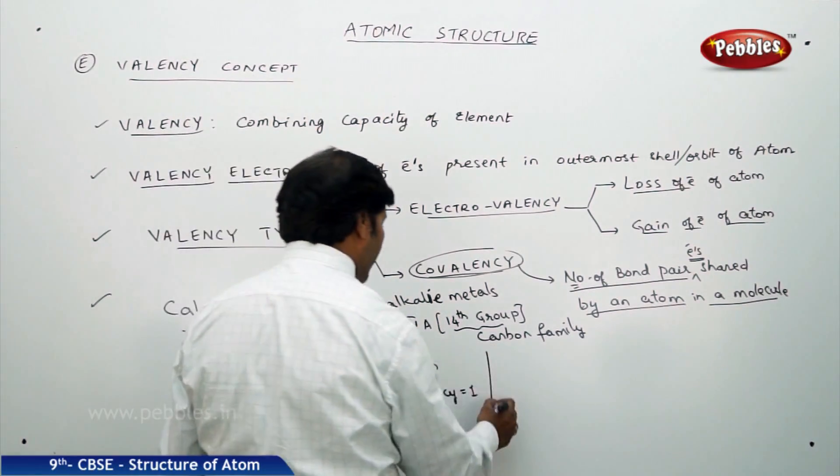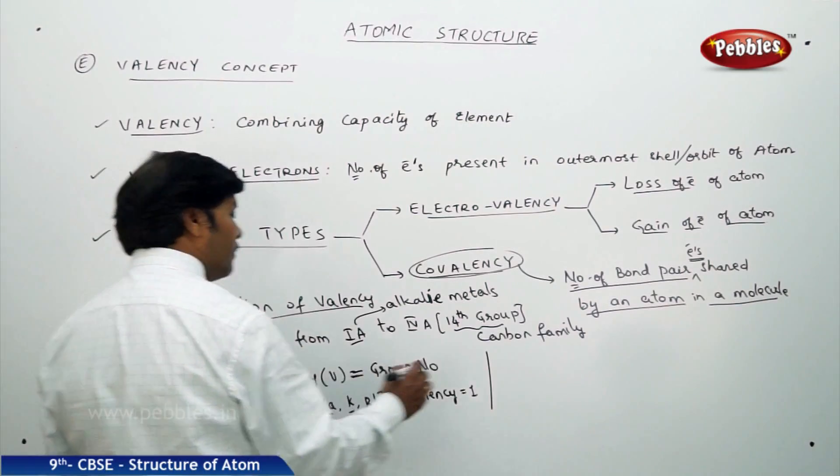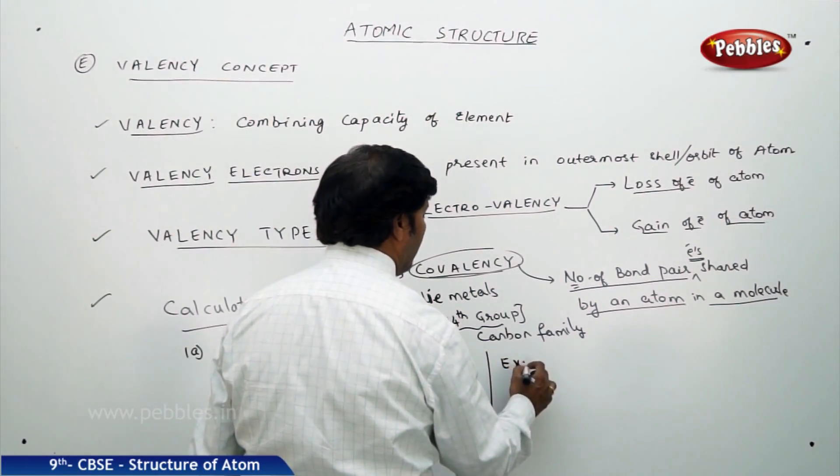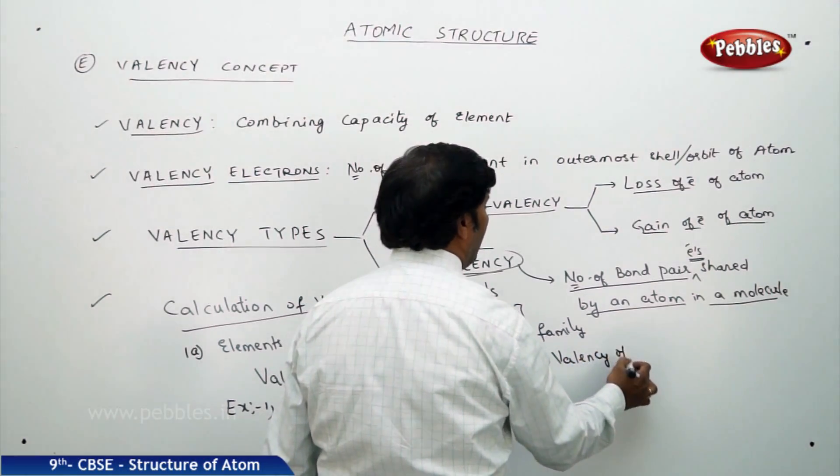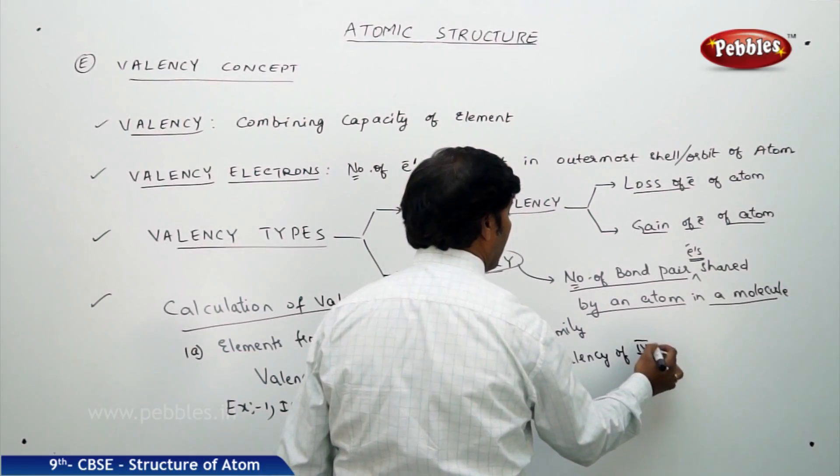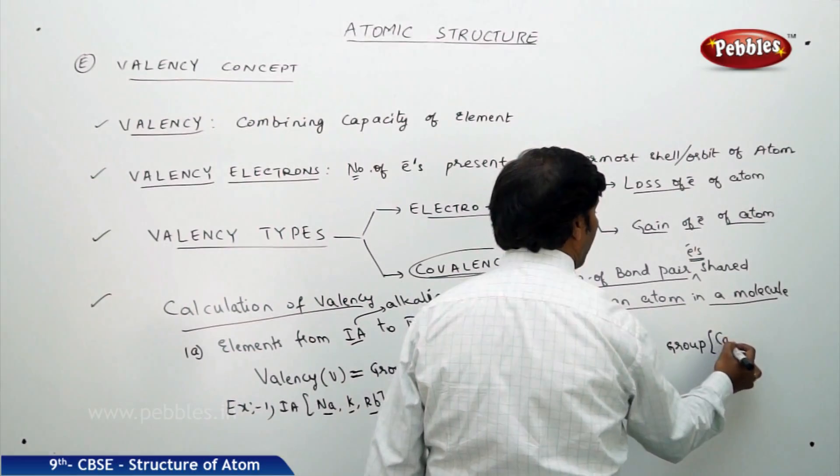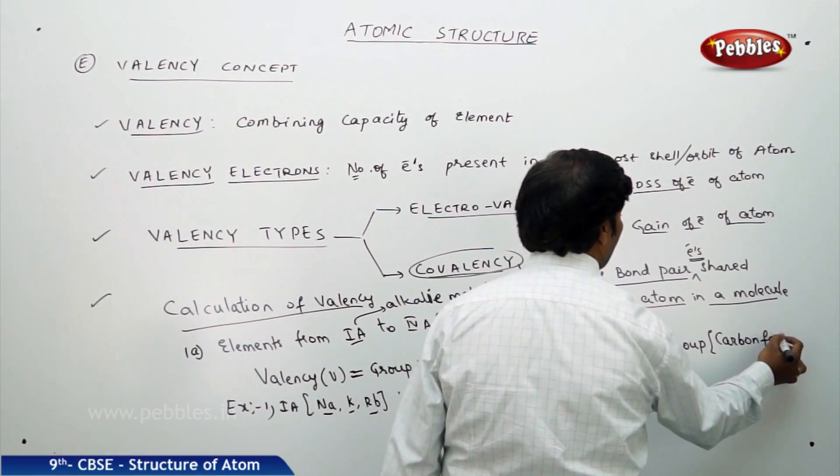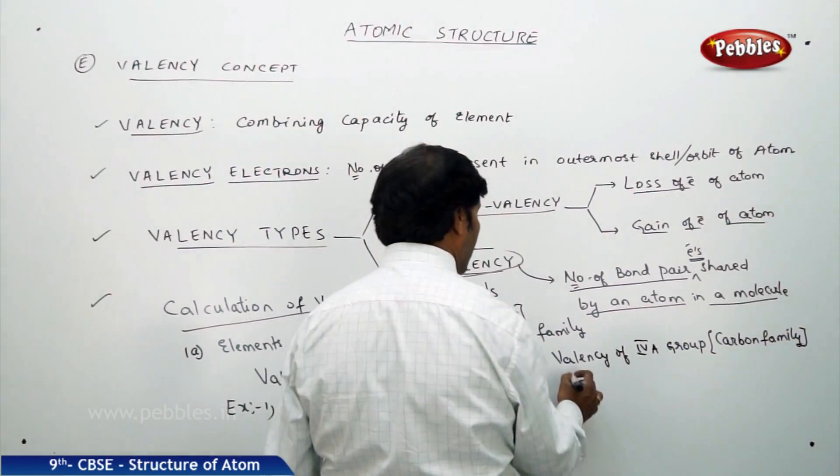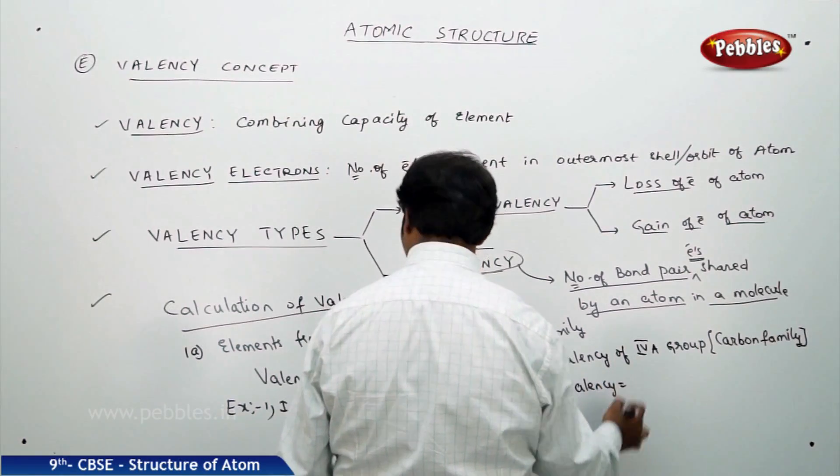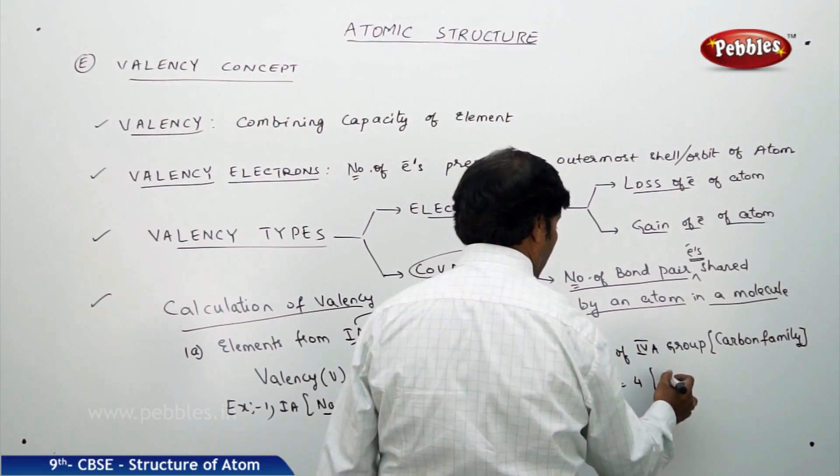For example, if you are going for 14th group, what is the valency? This is example 2. What is the valency of 4A group? 4A group that is carbon family. Valency of carbon family is equal to 4.